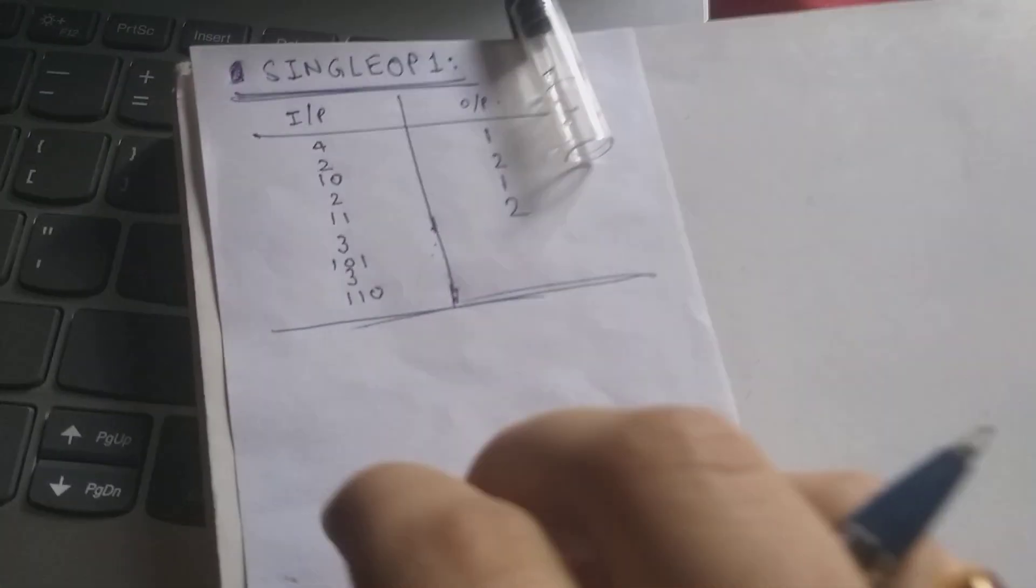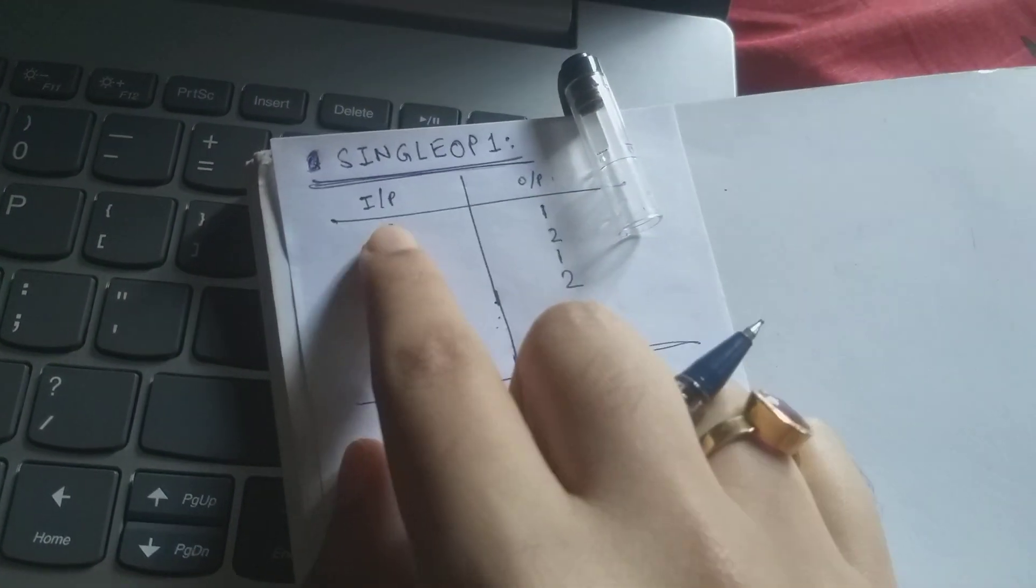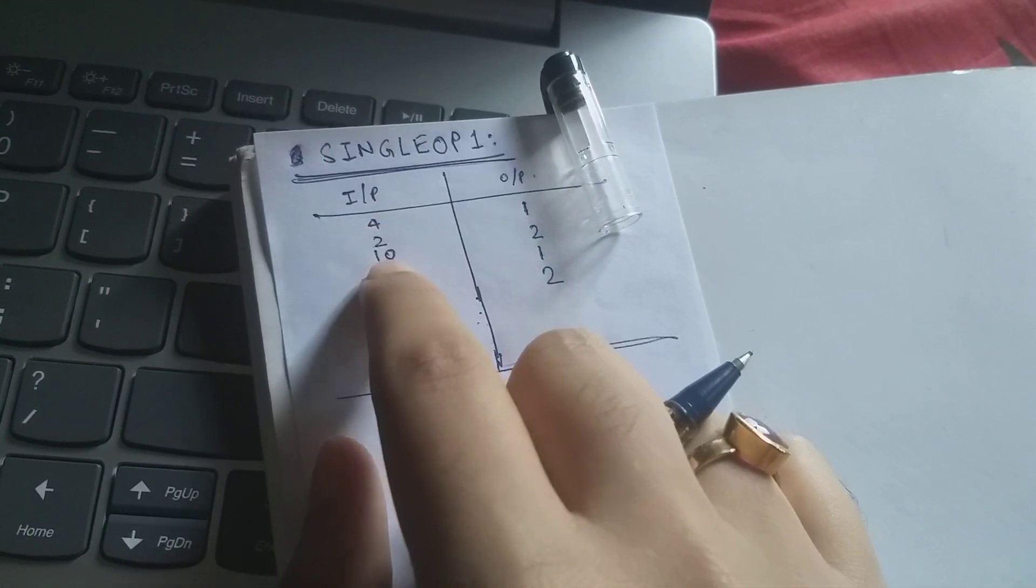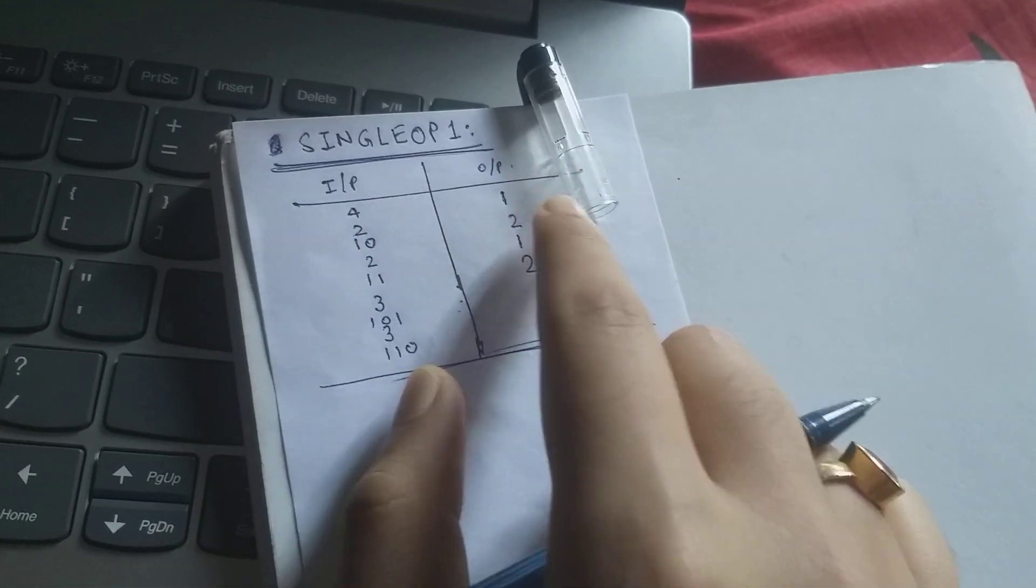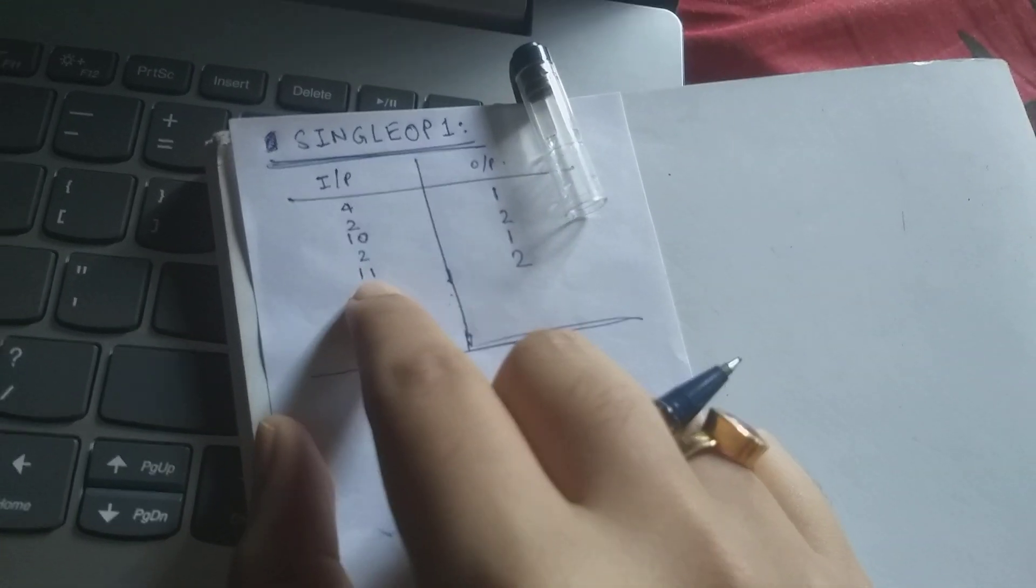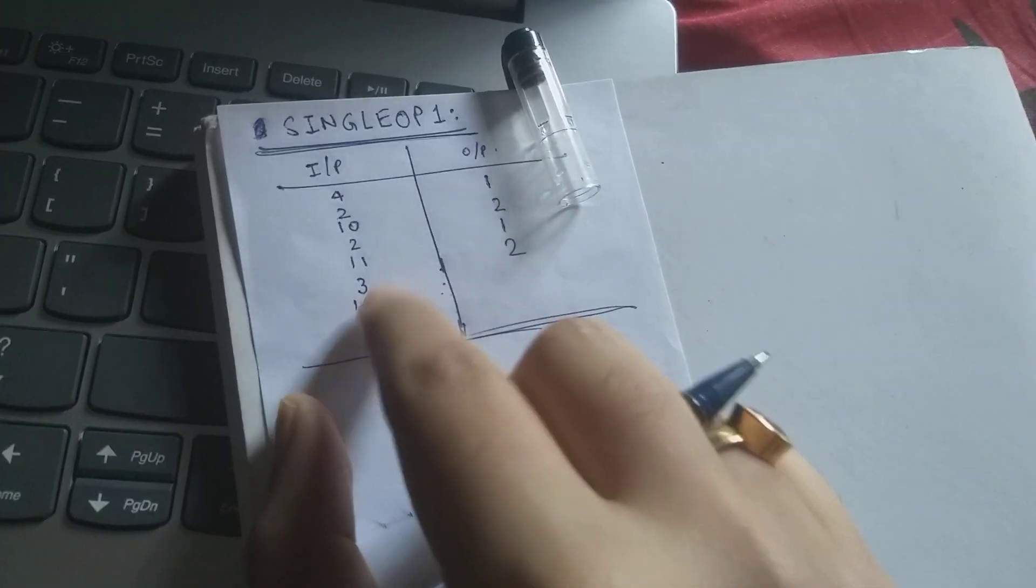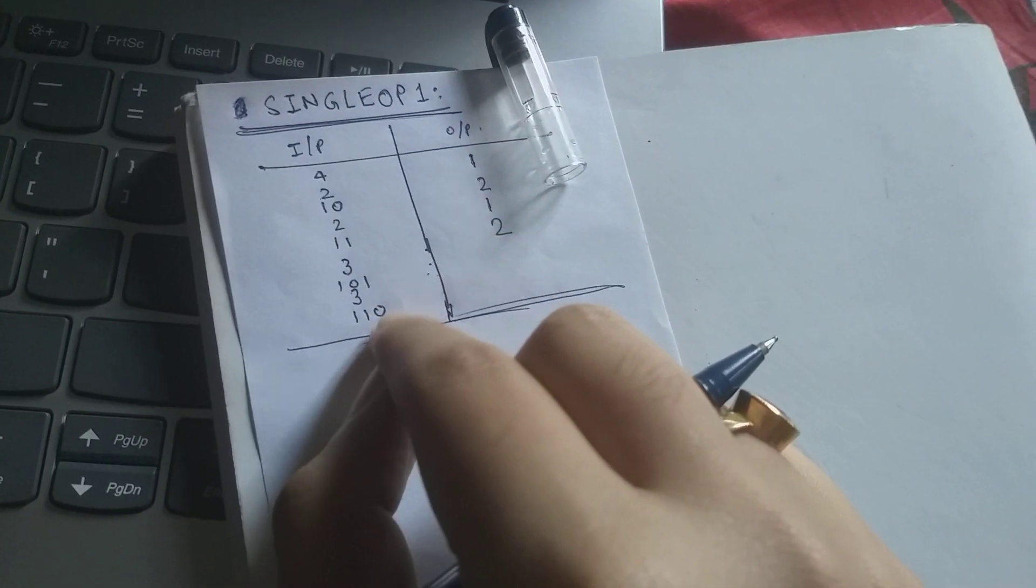The test cases are as follows. The length of the first string is 2 and the string is 10, output will be 1. 11 output will be 2. 101 output will be 1. 110 output will be 2.